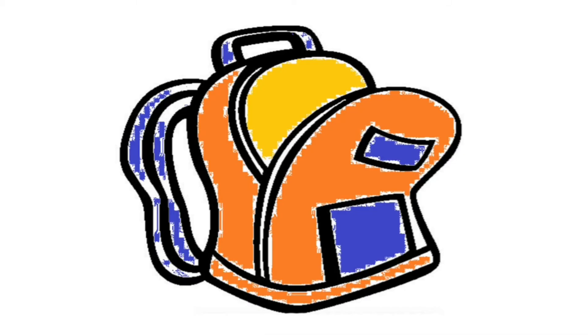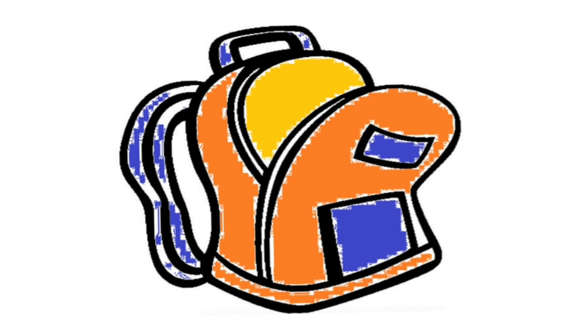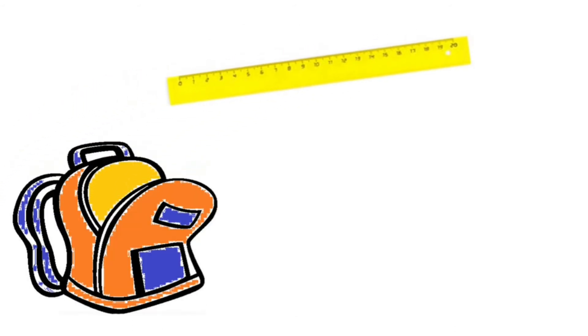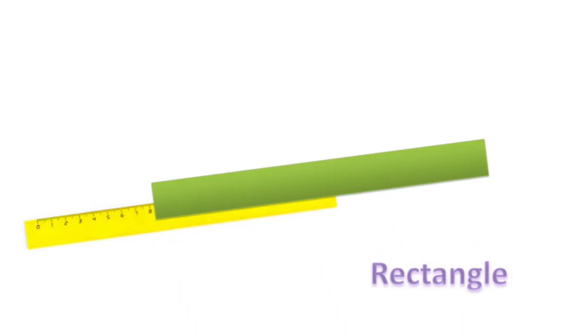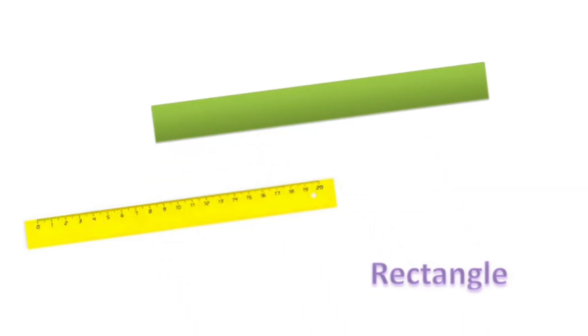Let's see what shapes are in the bag. A ruler. What shape is a ruler? It's a rectangle. A ruler looks like a rectangle.